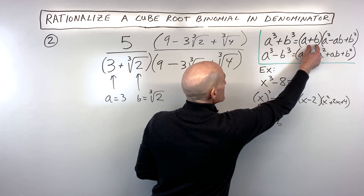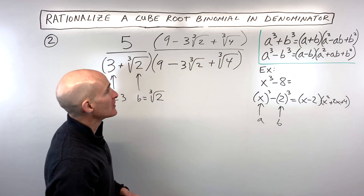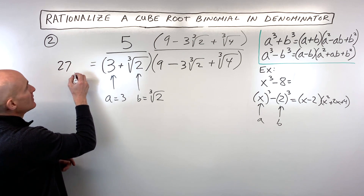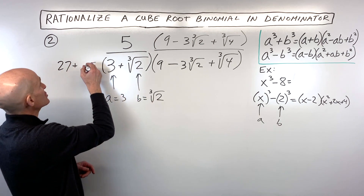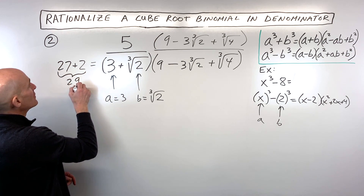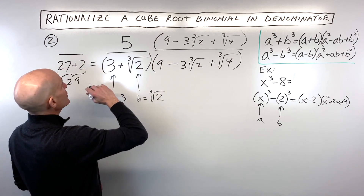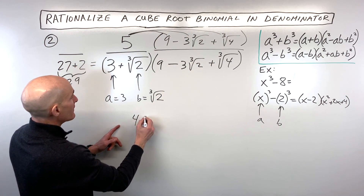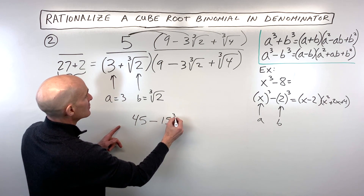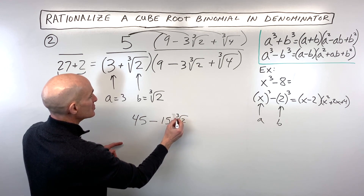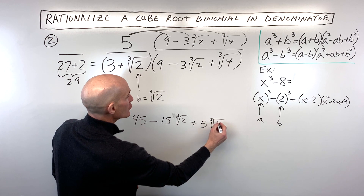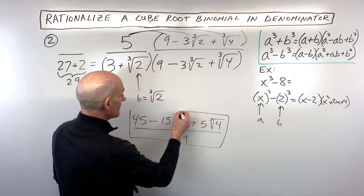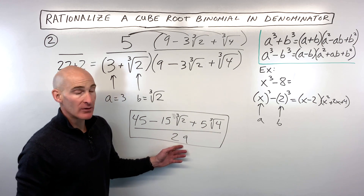When we multiply the binomial and trinomial together, we get the sum of two cubes: a cubed plus b cubed. Three cubed is 27, and the cube root of 2 cubed is just 2, so the denominator comes out to 29. For the numerator, we distribute the 5 into the parentheses, giving us 45 minus 15 times the cube root of 2 plus 5 times the cube root of 4, all divided by 29. The denominator is now rationalized — no radical, just an integer.